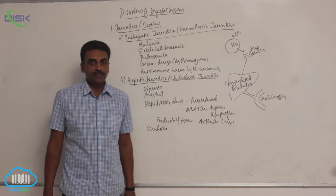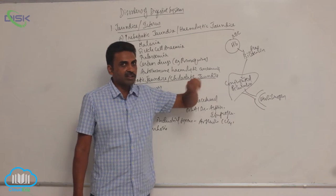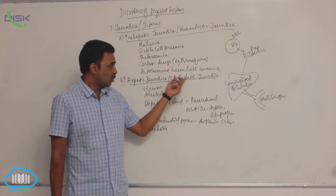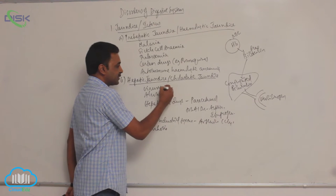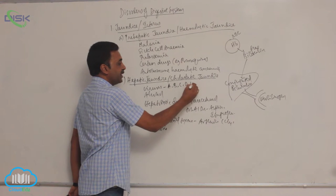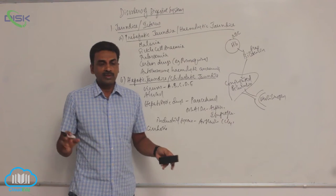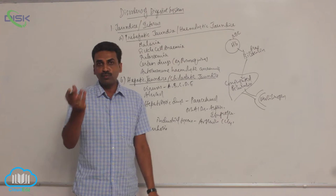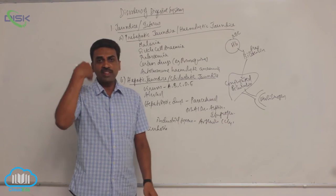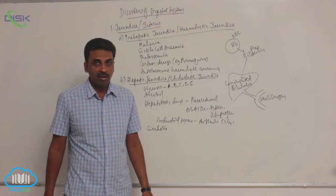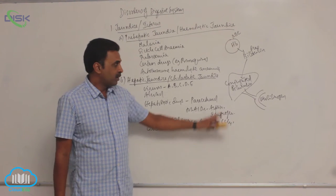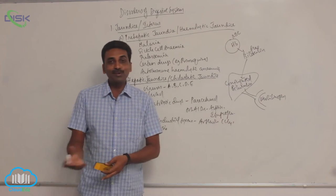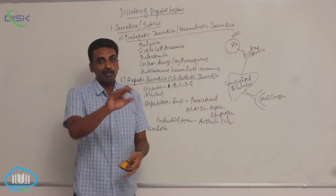Hepatic jaundice is also called cholestatic jaundice. The liver can be damaged by hepatitis viruses — strains A, B, C, D, and E. Hepatitis B and D enter through blood or sexual contact; hepatitis A and C enter through food and water. These viruses colonize inside the liver, damage liver cells, and reduce the capacity of liver cells to excrete conjugated bilirubin, so it goes back into blood.